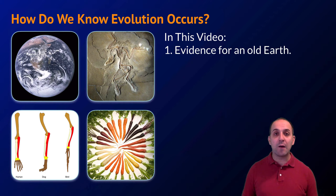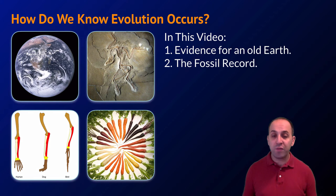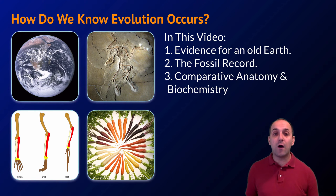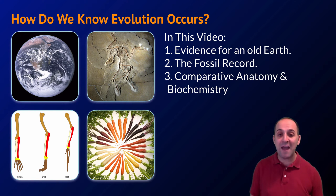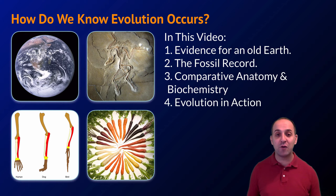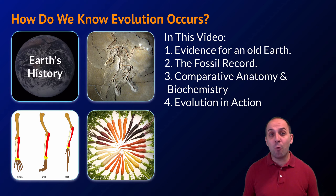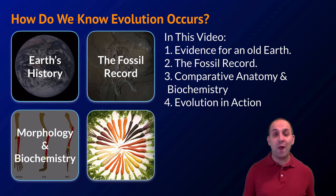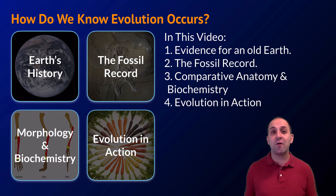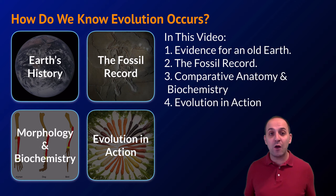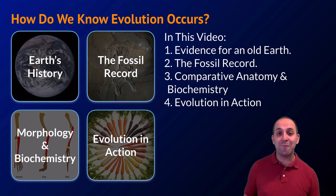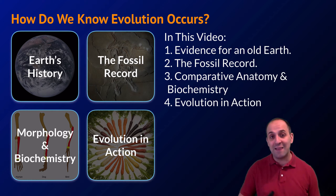In this video we're going to talk about the evidence for an old earth, we're going to talk about the fossil record, we're going to talk about evidence from comparing anatomy and biochemistry among different organisms, and we're going to look at evidence from evolution in action. These four bins of evidence represent one way of organizing the overall picture of evidence that supports evolutionary theory. It's certainly not the only way, but it's the way that I think makes the most sense.